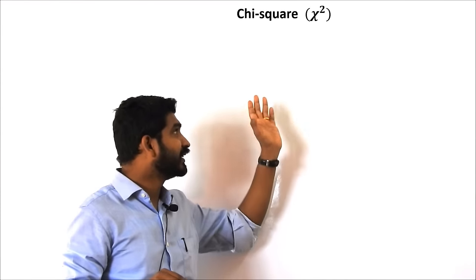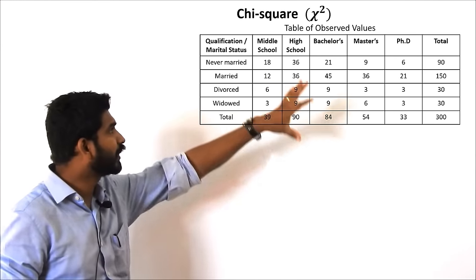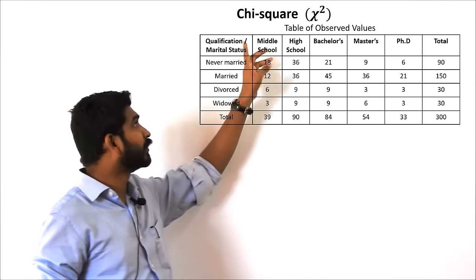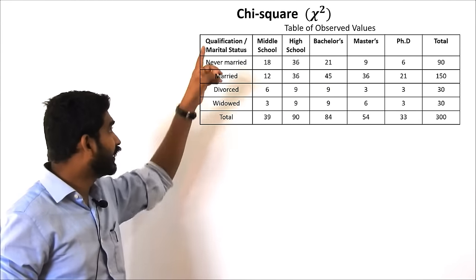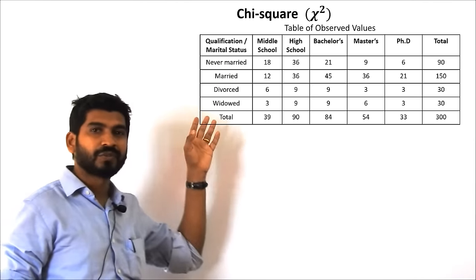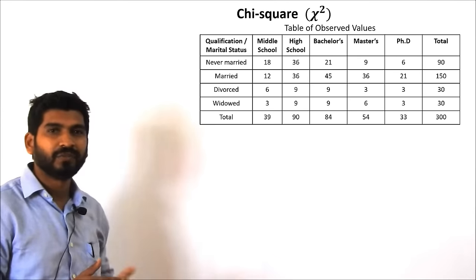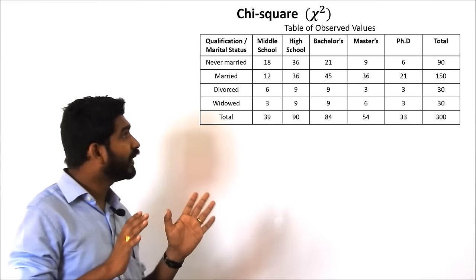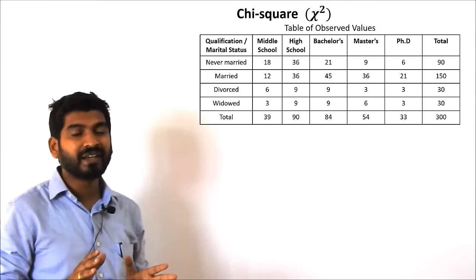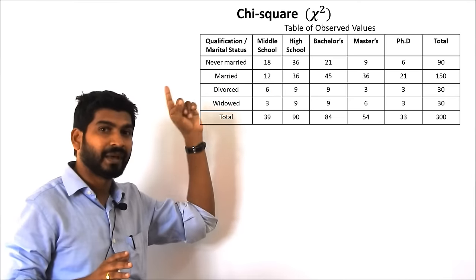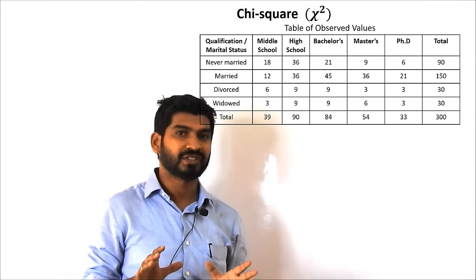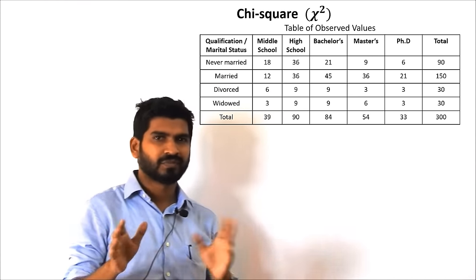First of all we need to find out what is our aim and why we are using the test. Consider this particular question — you can look at this table. In this table we have two variables: one represents the education qualification of a person and the other represents the marital status of a person, whether he is unmarried, married, divorced, or widowed. Our aim is to calculate or state whether the two variables — the education qualification and the marital status — are related to each other or have no relation with each other.